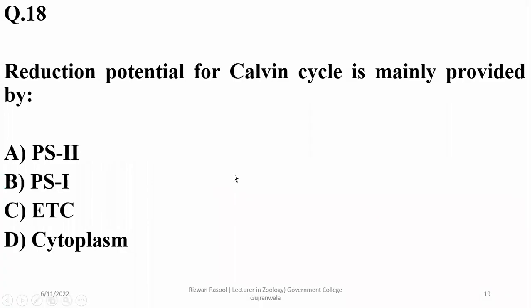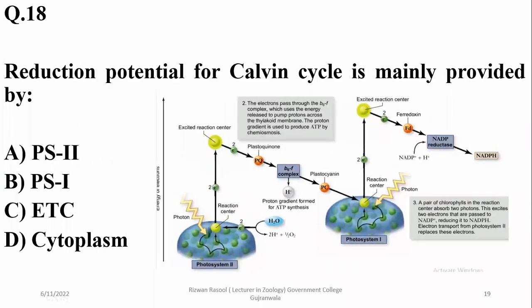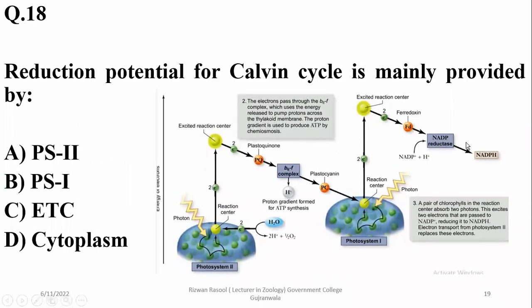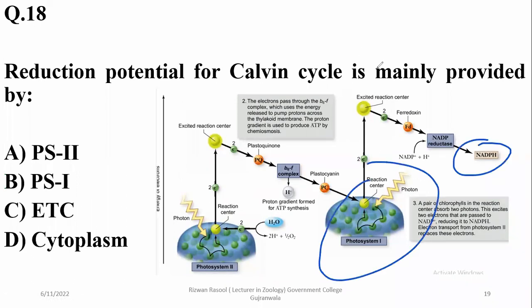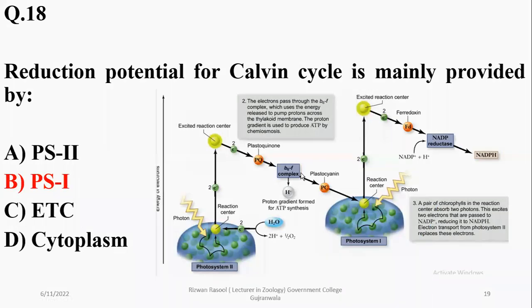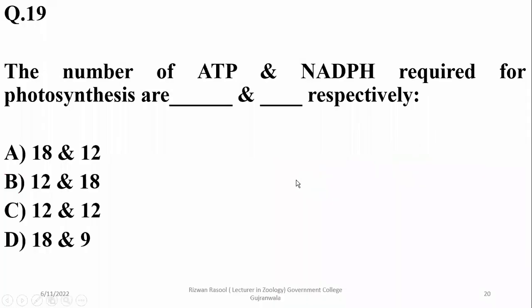Question eighteen: The reduction potential for the Calvin cycle is mainly provided by photosystem one, because NADPH formation is associated with photosystem one, as you can see. So the right option is beta.